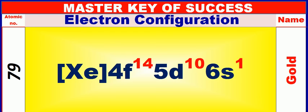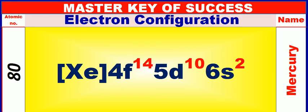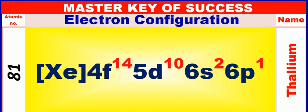Atomic number is 79 and name of atom is Gold. Atomic number is 80 and name of atom is Mercury. Atomic number is 81 and name of atom is Calium. Atomic number is 82 and name of atom is Lead.